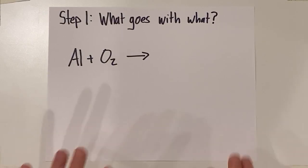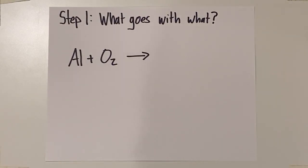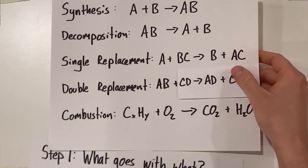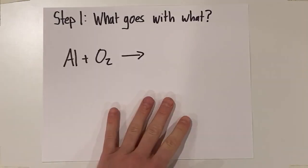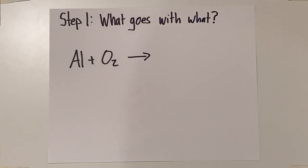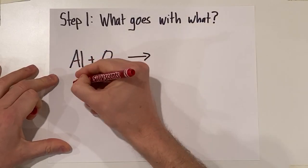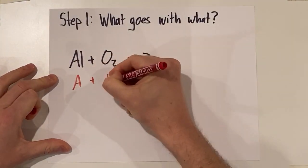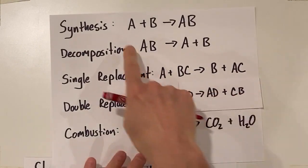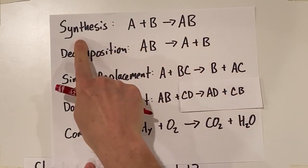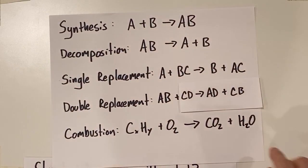Our next example is Al plus O2. What goes with what? There's no hydrocarbon, so we can just go ahead and do the letter pattern. Al is A and O2 is B — so A plus B. Looking at our reaction types, A plus B forming a single product is emblematic of a synthesis reaction where A and B come together to form a single product. So we're going to get AlO together.